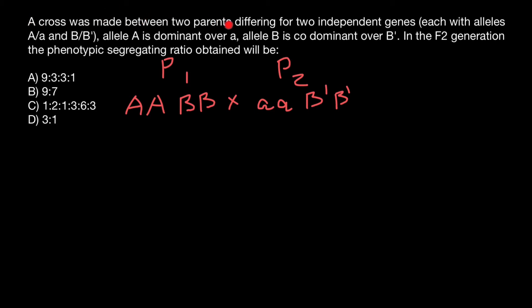Let's read the question again. A cross was made between two parents differing for two independent genes — gene A and B — each with alleles representing dominant and recessive, and two co-dominant alleles. Allele A is dominant over the recessive allele a, and allele B is co-dominant over B'. This is exactly what we see here in our parental generation.